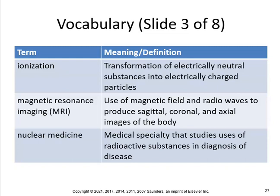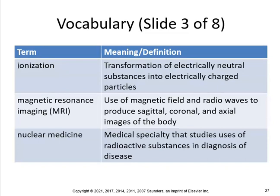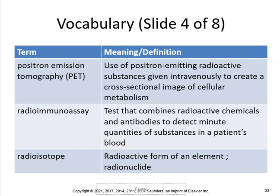Nuclear medicine is the medical specialty that studies the use of radioactive substances in the diagnosis of disease. PET — positron emission tomography — uses a positron-emitting radioactive substance given intravenously to create a cross-sectional image of cellular metabolism. Radioimmunoassay combines radioactive chemicals and antibodies to detect minute quantities of substances in a patient's blood. A radioisotope is a radioactive form of an element, also called a radionuclide. Regarding radiation exposure: MRIs have no radiation, x-rays have minimal, CT scans are higher, and PET scans have the highest. So avoid ordering too many PET or CT scans. You can get an MRI every day without radiation risk.